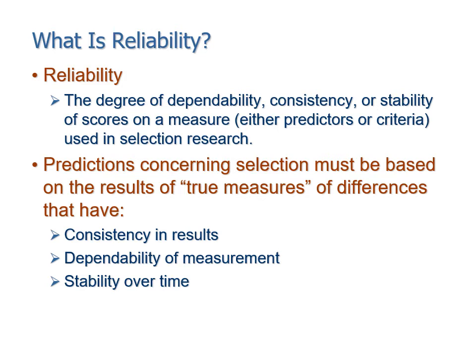Reliability is simply the degree of dependability, consistency, or stability of a measure — whether a predictor or criterion — used in selection research. If we're measuring a stable construct like performance, leadership, or personality, a measure should give us approximately the same score each time we give it to the same person. There needs to be consistency in results, dependability of the measure, and stability over time. Whenever we ask whether a measure is doing what it's supposed to do, our first question is: is it at least reliable? We want it to be both reliable and valid, but reliability is the first thing to check and is easier to identify mathematically.